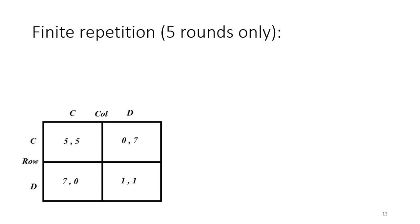One key characteristic of the infinite horizon game is that there's always going to be a future — always something to worry about happening down the line if I do something shady today. For now, we're going to consider the finite time horizon case. Let's suppose we're going to play the static game just five times, and we want to get a prediction for what will happen in the sequence of play.